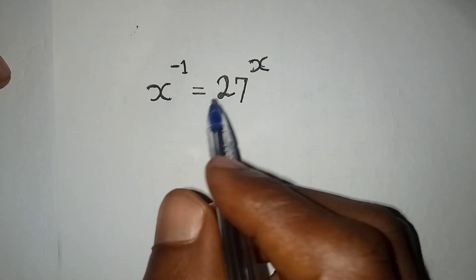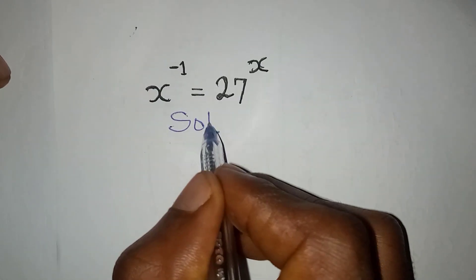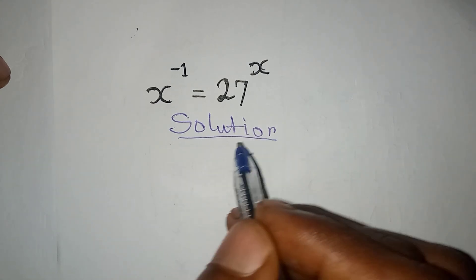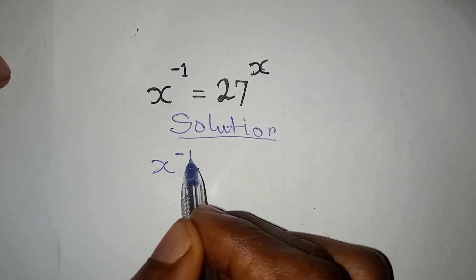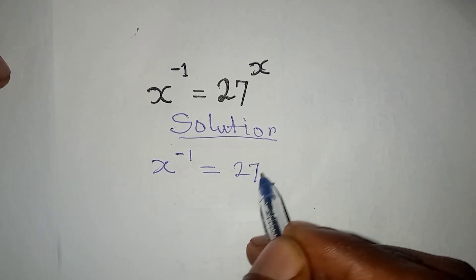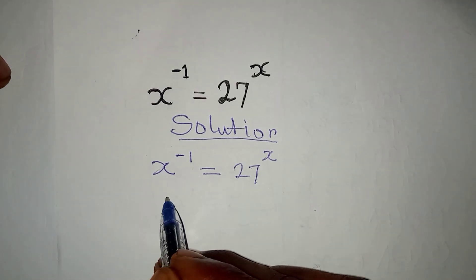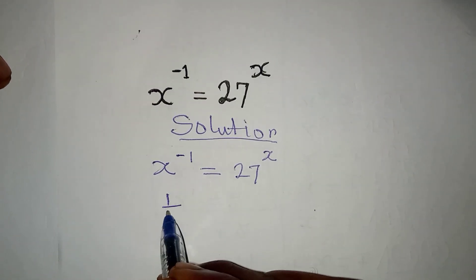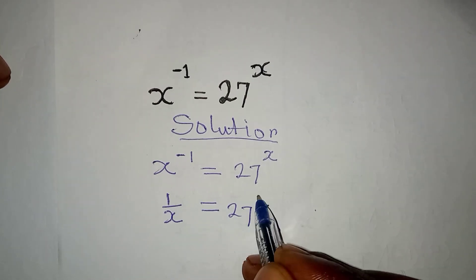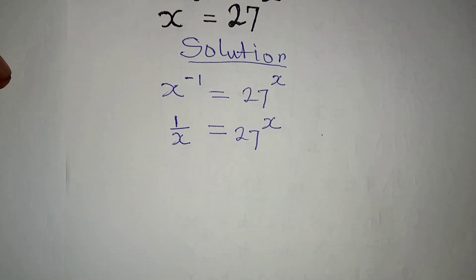Hello everyone, let's solve this problem quickly. We have x to the power of negative 1 to be equal to 27 to the power of x. Then x to the power of negative 1 is 1 over x, according to the law of indices, and this is equal to 27 to the power of x.